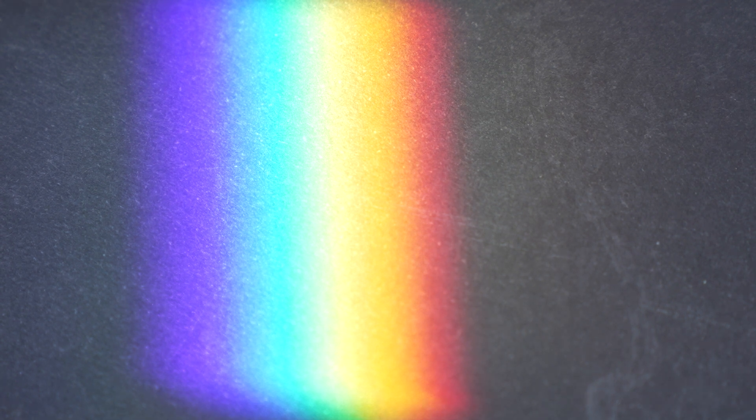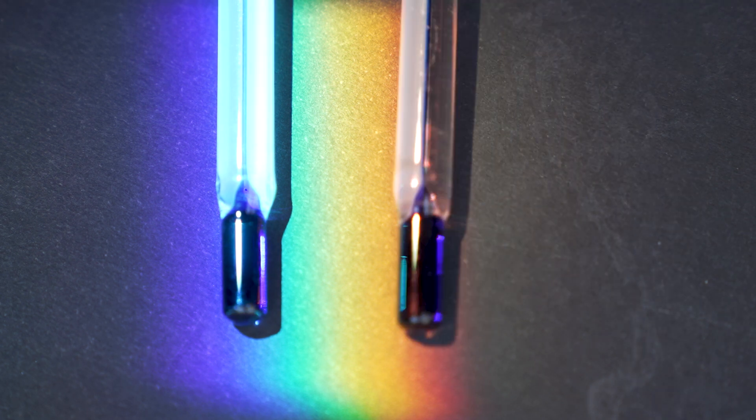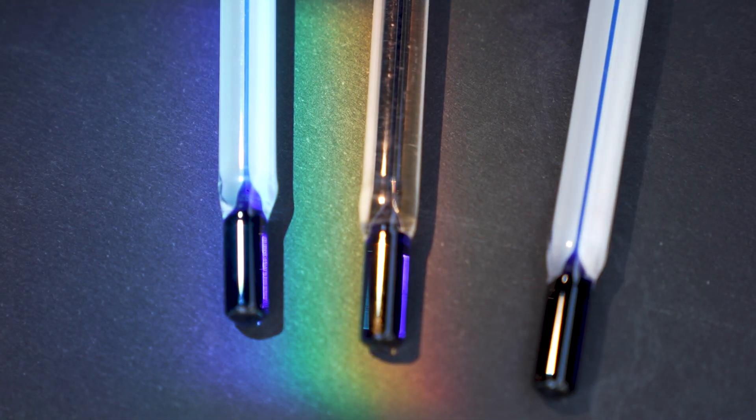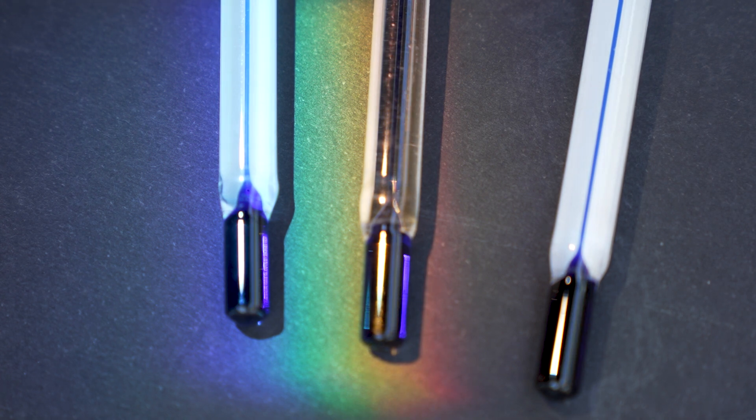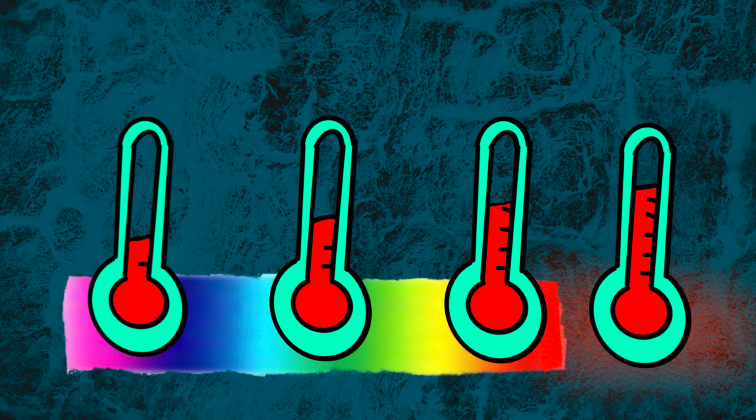And so he conducted an experiment where he laid down thermometers in each of the different colours. And he also laid down a thermometer outside of the visible red light. And while all the thermometers did heat up he found that the temperature increased from the blue light to the red light with the red being the warmest of all of the visible light. But to his surprise he found that the thermometer sitting outside of the visible red light was the warmest of them all.